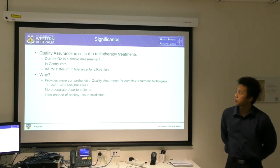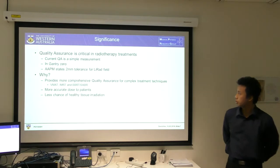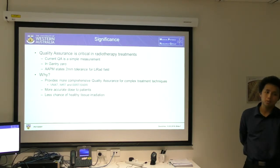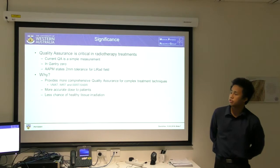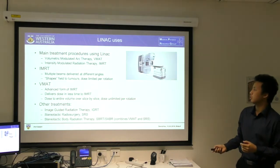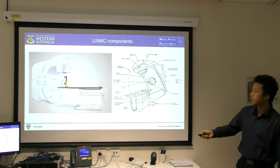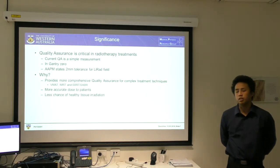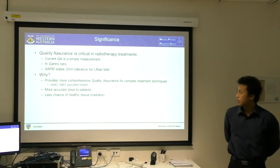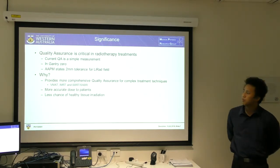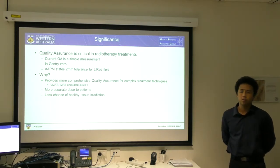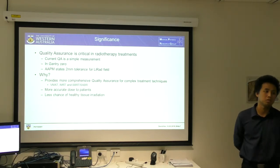My project is mainly quality assurance for the LINAC, and it's very critical because AAPM states there is a 2mm tolerance for light radiation fields. Most current quality assurance methods only conduct the QA of this light radiation field at Gantry 0, and thus don't go into much difference for arc measurements. Measuring in arc is more complex but it helps for VMAT, IMRT, and SBRT, delivering a more accurate dose to patients as it rotates, meaning less chance of healthy tissue irradiation throughout the rotation.